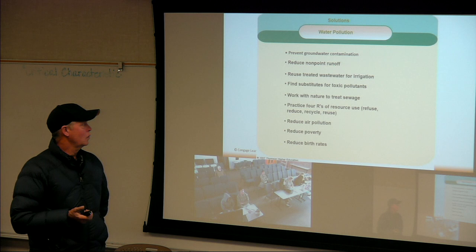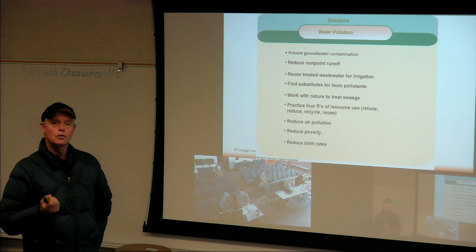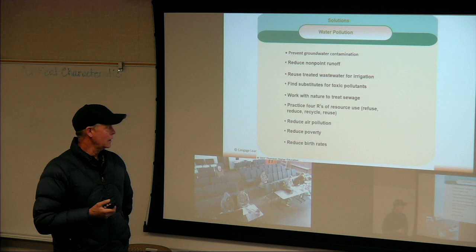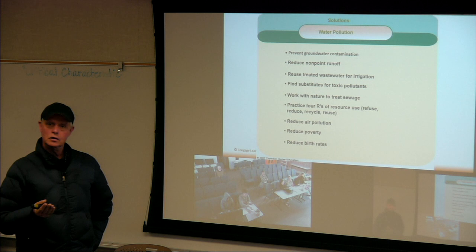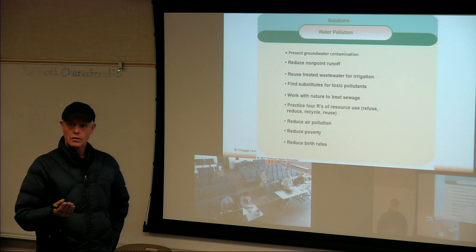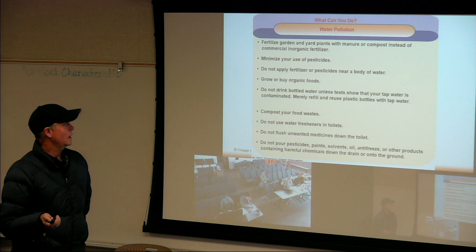Work with nature to treat sewage. Practice the four R's of resource use: Refuse — don't buy things we don't need; Reduce; Recycle; Reuse. Then reduce air pollution input. Some of the cultural and social issues we know from sustainability that affect all of this include reducing poverty — people in poverty can't take care of this stuff themselves. And ultimately, try to reduce birth rates, because our big environmental issue is simply too many people.